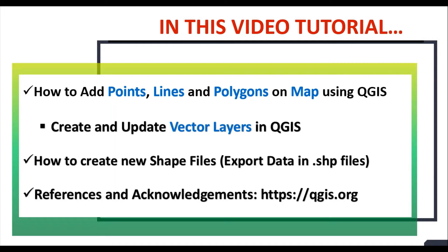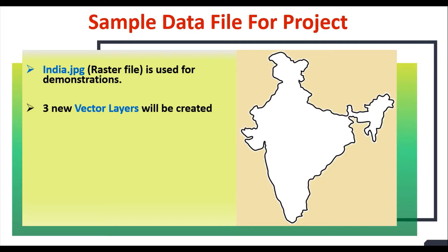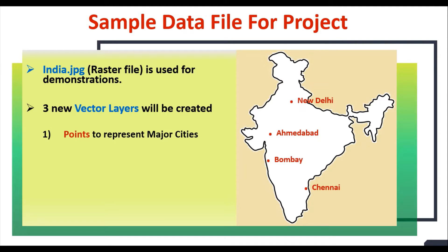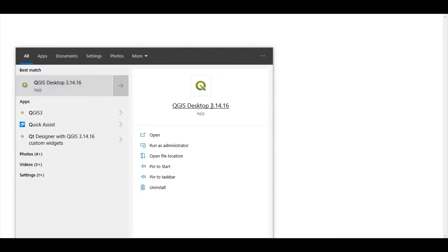Special thanks to the developer of QGIS for providing such a nice software. I am going to use India.jpg raster file for demonstration in this project. Three new vector layers will be created: points to represent major cities, lines to represent new highways, and polygons to represent dam sites. Download an image of your country for practice and let's develop a QGIS project to add points, lines and polygons.